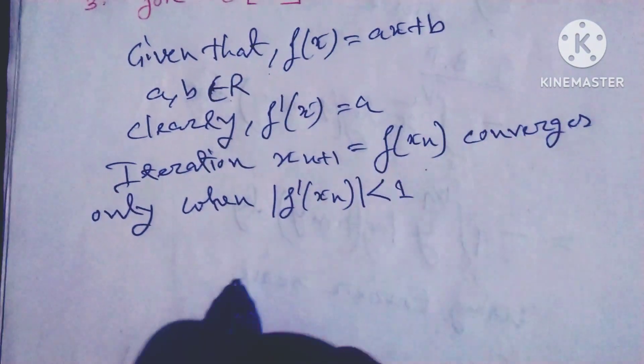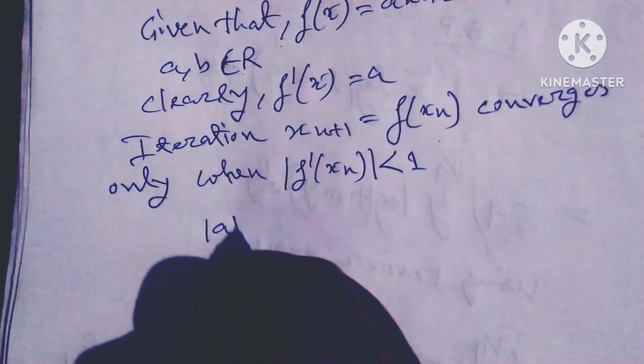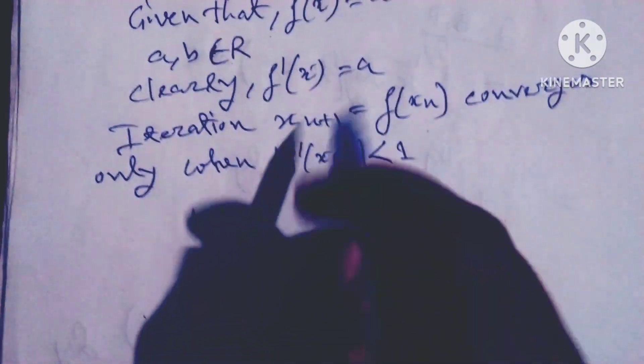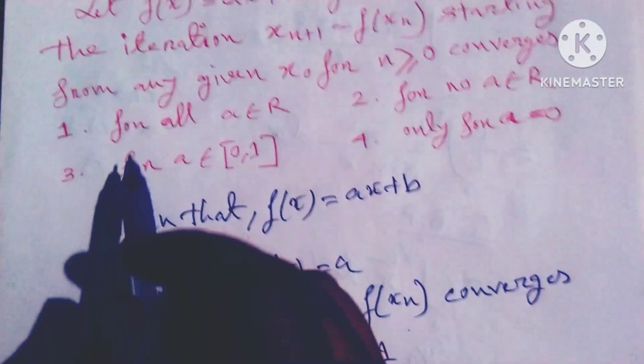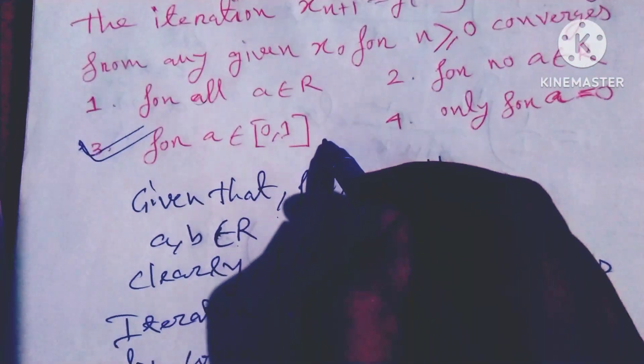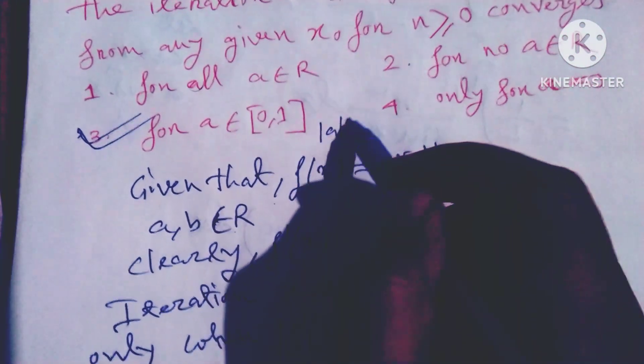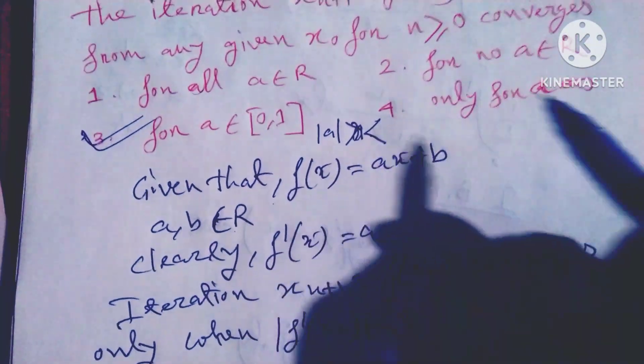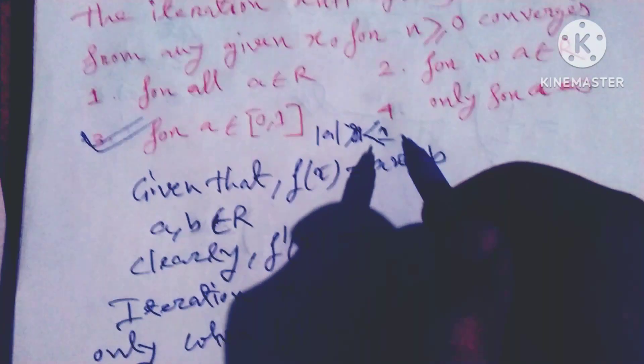...that is |a| < 1. So option 3 is correct. Because in option 1, |a| could be greater than 1, which doesn't guarantee convergence.